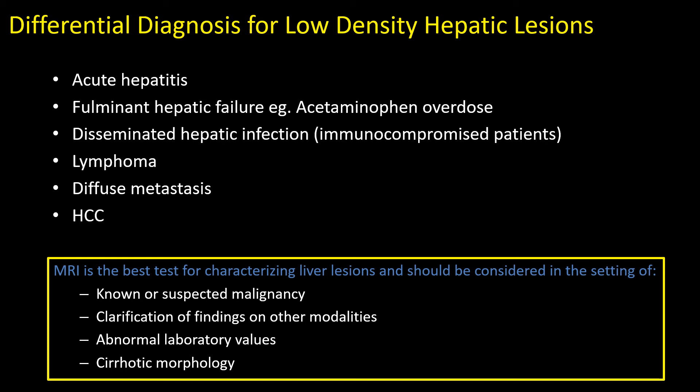When you encounter focal fat or suspected focal fatty sparing on CT or ultrasound, MRI is the best test. If you're very confident on ultrasound or CT you may be able to call it directly, but if the patient has known or suspected malignancy, abnormal lab values, or underlying cirrhosis, you should consider obtaining an MRI for additional characterization — it will increase your confidence and reduce the risk of missing an underlying neoplasm confounded by the steatosis.